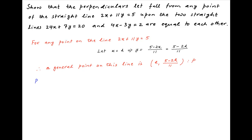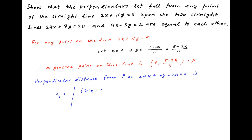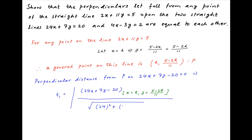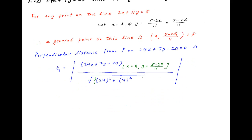Let's denote this point by P. The perpendicular distance from point P onto the given line 24x plus 7y minus 20 is equal to 0 — let's denote it by t1 — is equal to the absolute value of 24x plus 7y minus 20, where x equals h and y equals 5 minus 2h upon 11, divided by the square root of the sum of the squares of the coefficients of x and y in the equation of the line 24x plus 7y minus 20 equals 0. Notice that the expression under the square root in the denominator is equal to 625, which is equal to 25 squared.